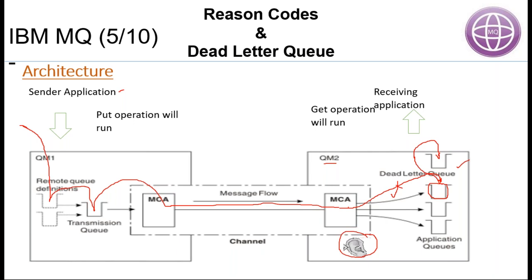From the sending side there is no problem — sending side says it successfully sent the message. But on the receiving queue side there is a problem. If there is no dead letter queue assigned for queue manager QM2, this message is going to be vanished. But if there is a dead letter queue, then that message will be routed into the dead letter queue so it won't be vanished. Your message is not going to be vanished because we have a dead letter queue. So the purpose of dead letter queue is: if you have some problem with the receiving queue, instead of the message vanishing, your message will be routed to the dead letter queue. Later you can troubleshoot why the message is in the dead letter queue and route it to the actual destination queue. But first of all, you are protecting that message.